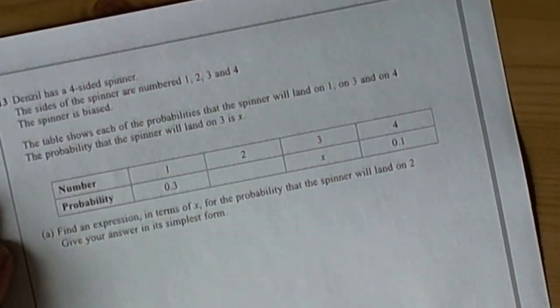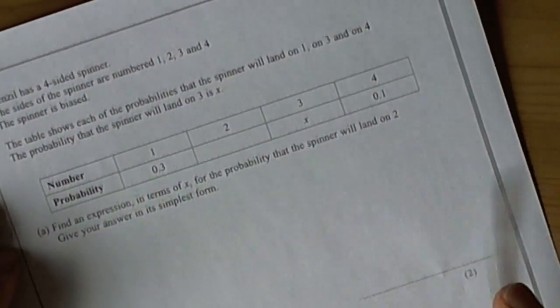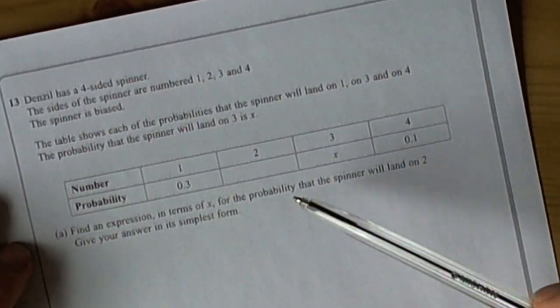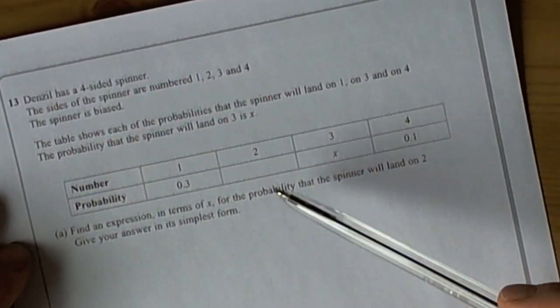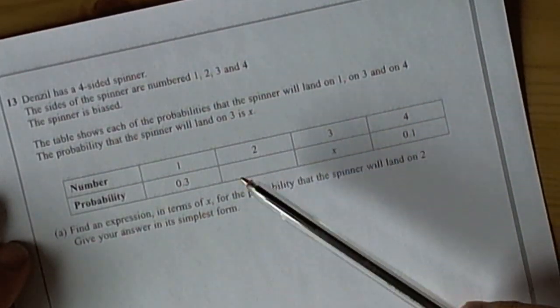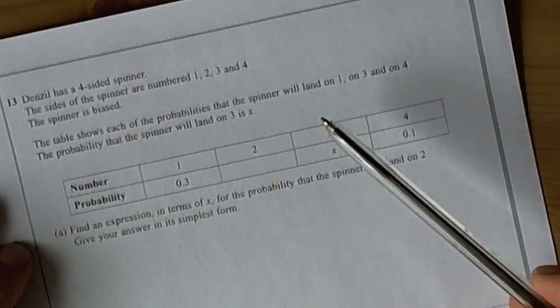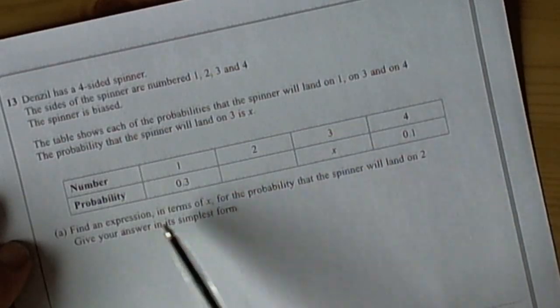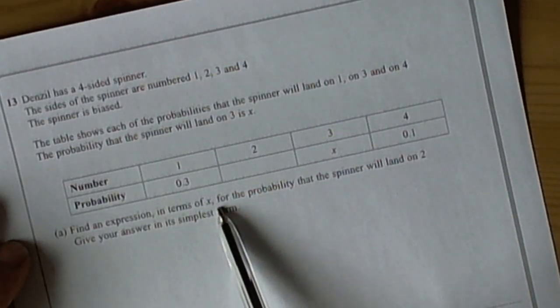In the Unit 1 exam and the linear exams as well, they can expect you to use expressions in context. So for example here we've got a probability question and it asks us to find an expression in terms of x.